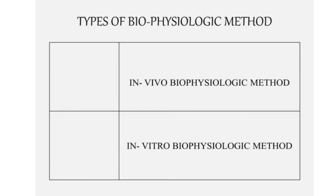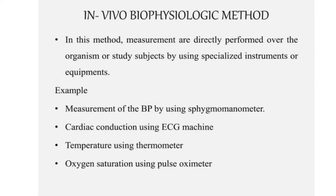The types of biophysiological methods: there are two types — in vivo biophysiological method and in vitro biophysiological method. In the in vivo biophysiological method, measurements are directly performed over the patient using some specialized equipment.